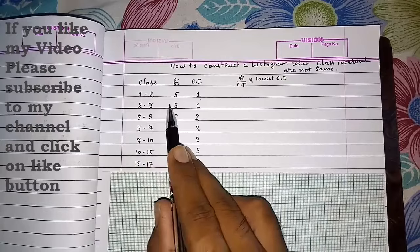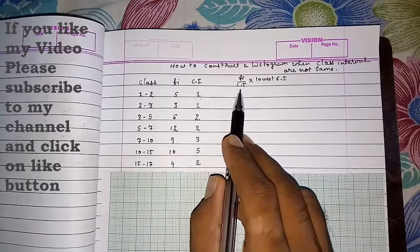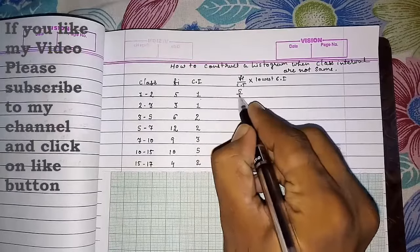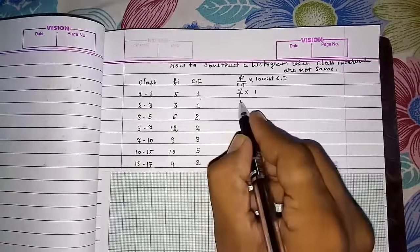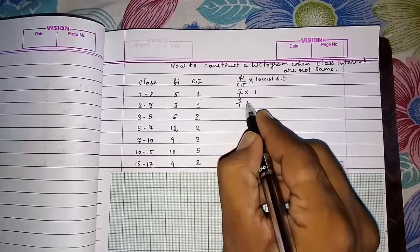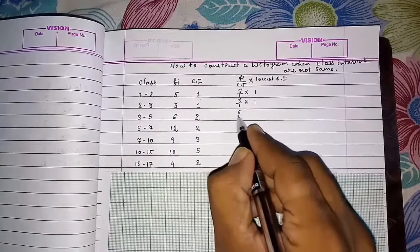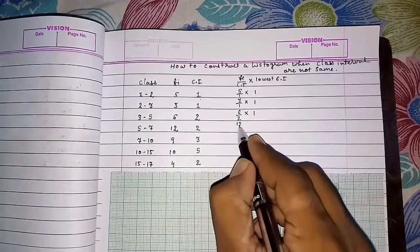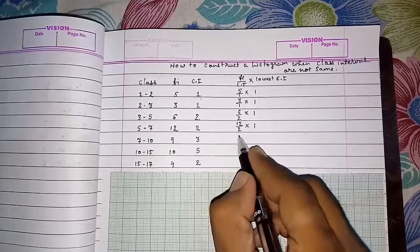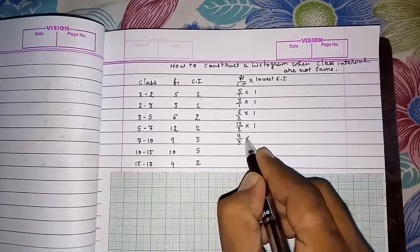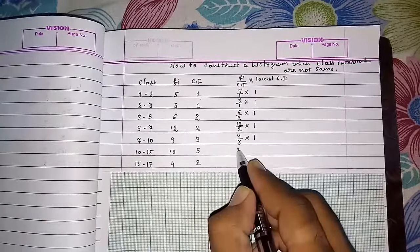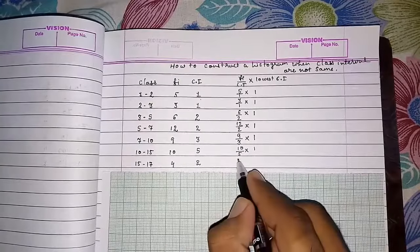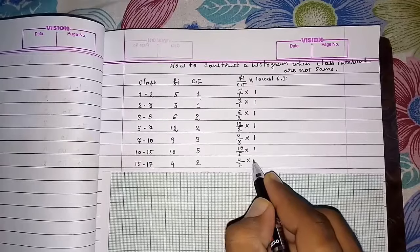So first we will divide this frequency upon class interval, means 5 upon 1, and then multiply with 1. Here 3 by 1, then multiply with 1. Here 6 by 2, then multiply with 1. Here 12 by 2, then multiply with 1. Here 9 by 3, then multiply with 1. Then 10 by 5 and multiply with 1. Then 4 by 2 and multiply with 1.